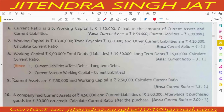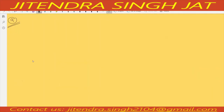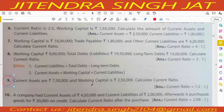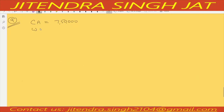Let's begin question number nine. Current assets are given 7,50,000 and working capital is given 2,50,000. We need to compute the current ratio.